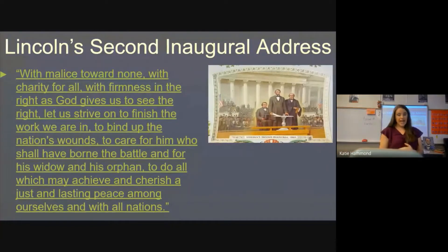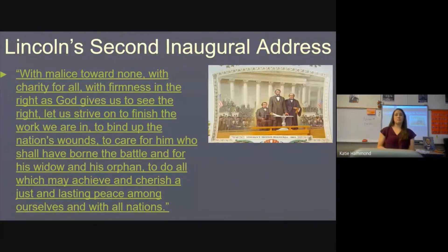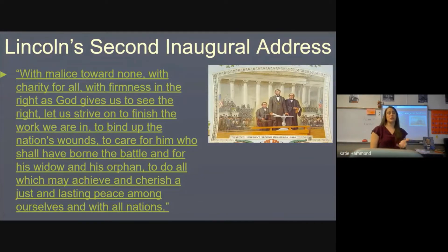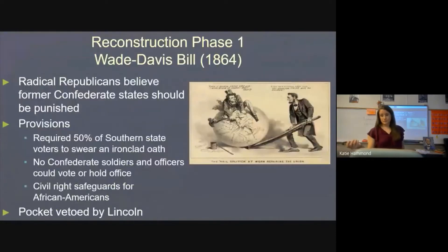Lincoln outlined his plan as early as 1863. The Second Inaugural Address highlights wanting to restore the union. His plan's nickname was the 10% Plan — if you see the word amnesty that just means forgiveness. He wanted to be lenient on the South; 10% loyalty was hardly anything, and states had to acknowledge slavery was over. Given that the South lost the Civil War, those two requirements were pretty lenient.